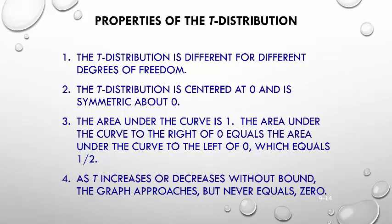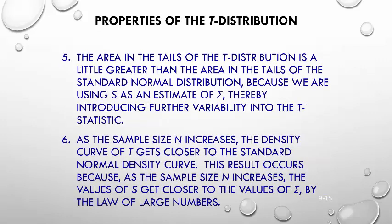Just like the normal distribution, as t increases or decreases without bound, the graph approaches but never equals 0 — the tail areas get smaller and smaller. The key difference between the standard normal curve and the t-distribution is that the area in the tails of the t-distribution is a little greater than the tails of the standard normal. This is because we are using the sample standard deviation as an estimate for the population standard deviation, introducing further variability into the t-statistic — that's why we have those larger, fatter tails.